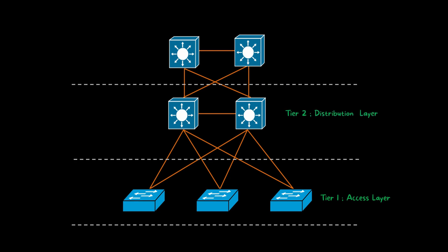The second layer, tier two, is called the distribution layer. In the distribution layer we use distribution switches. The main function of the distribution switches is to provide network connectivity to the access layer switches. Distribution layer switches are also used to connect critical services like servers, network printers, or any other kind of critical services.